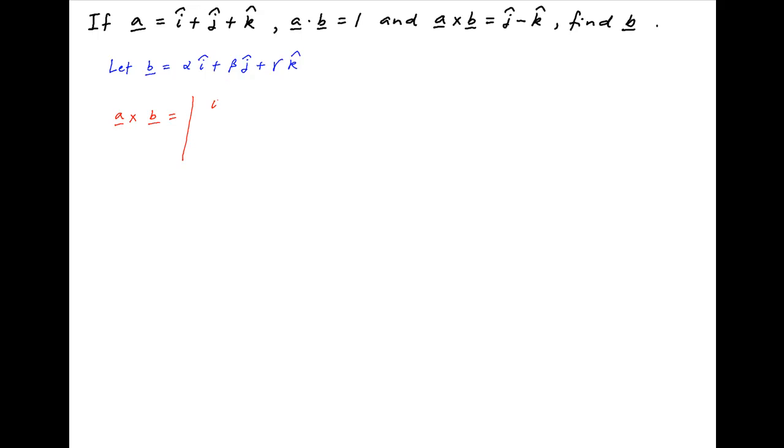Therefore, the cross product of vectors a and b can be expressed in determinant form. The first row is i, j and k. The second row is the components of vector a, which are 1, 1 and 1. And the third row are the components of vector b, which are alpha, beta and gamma.